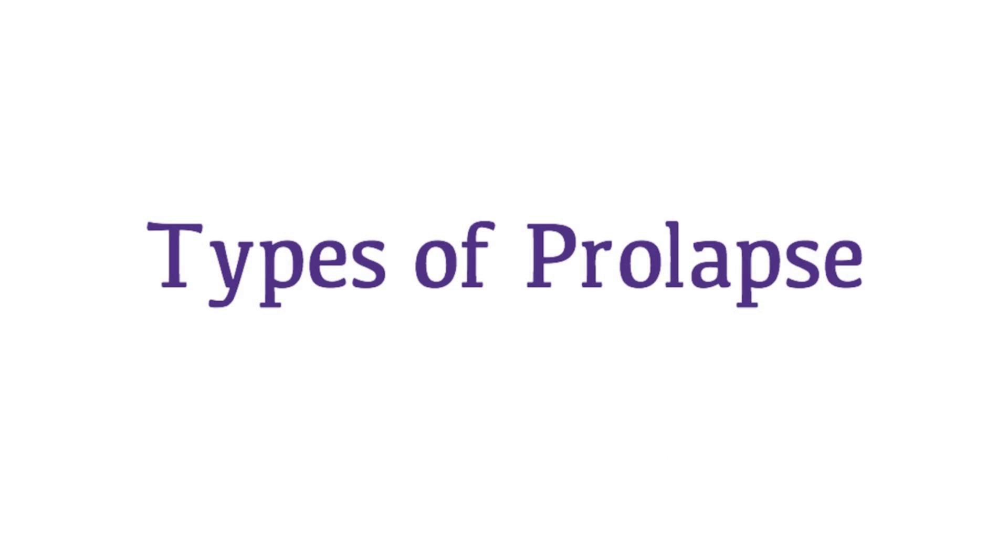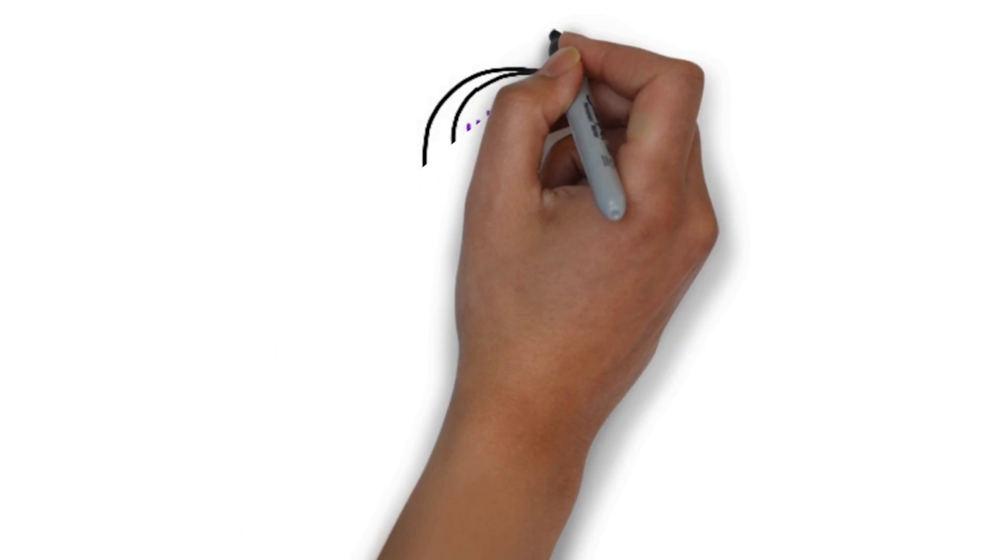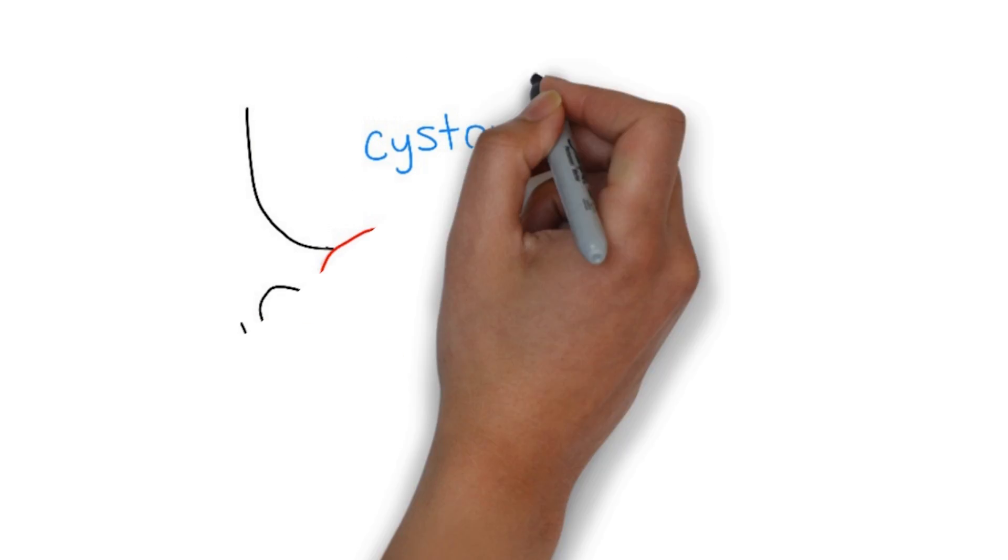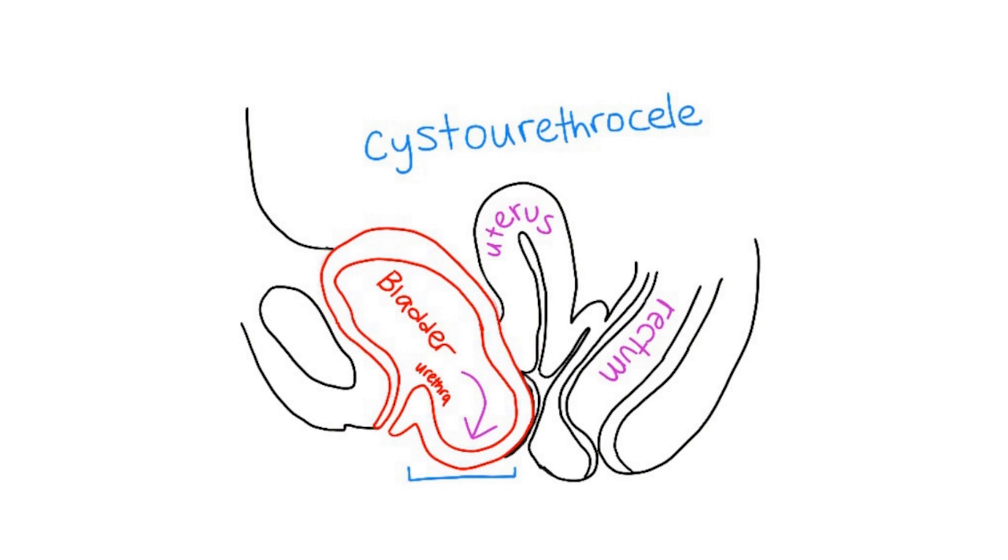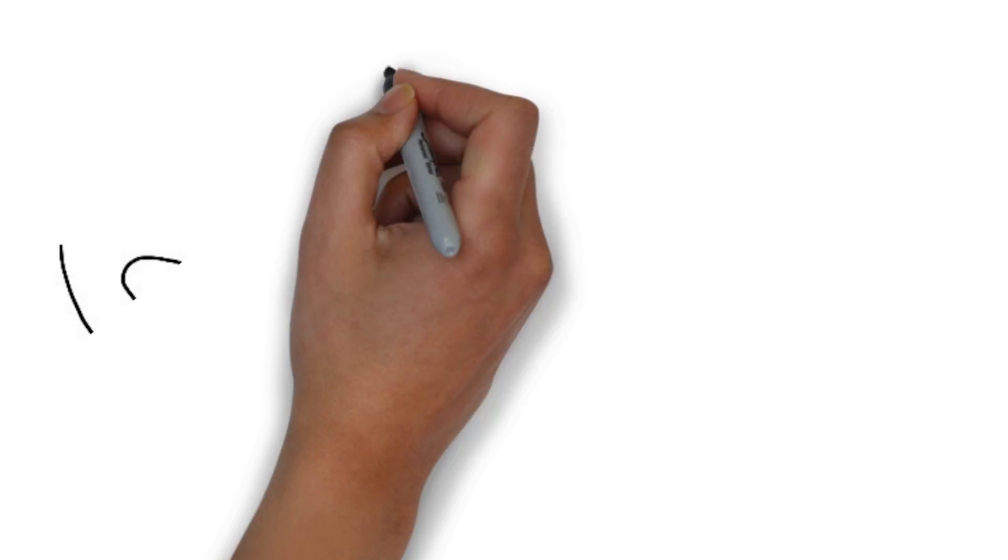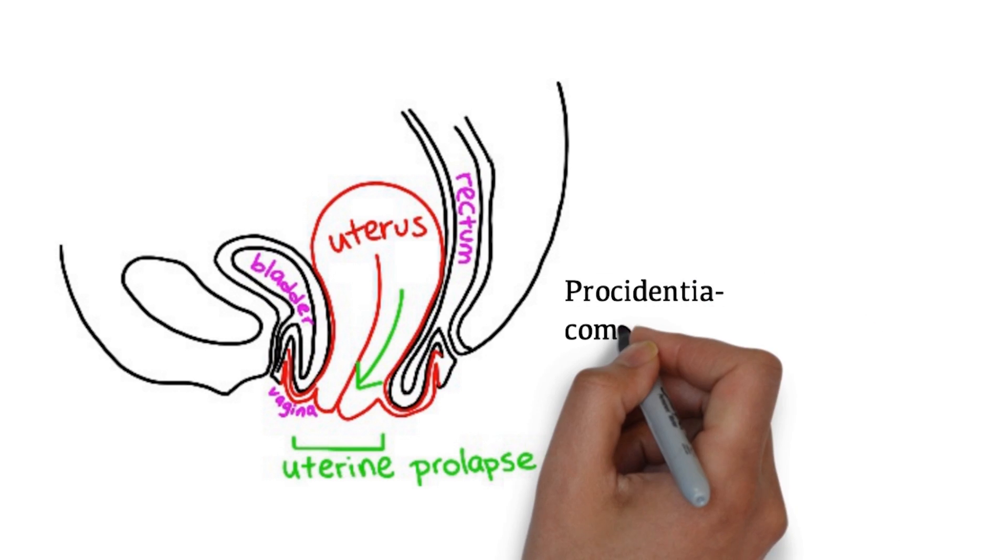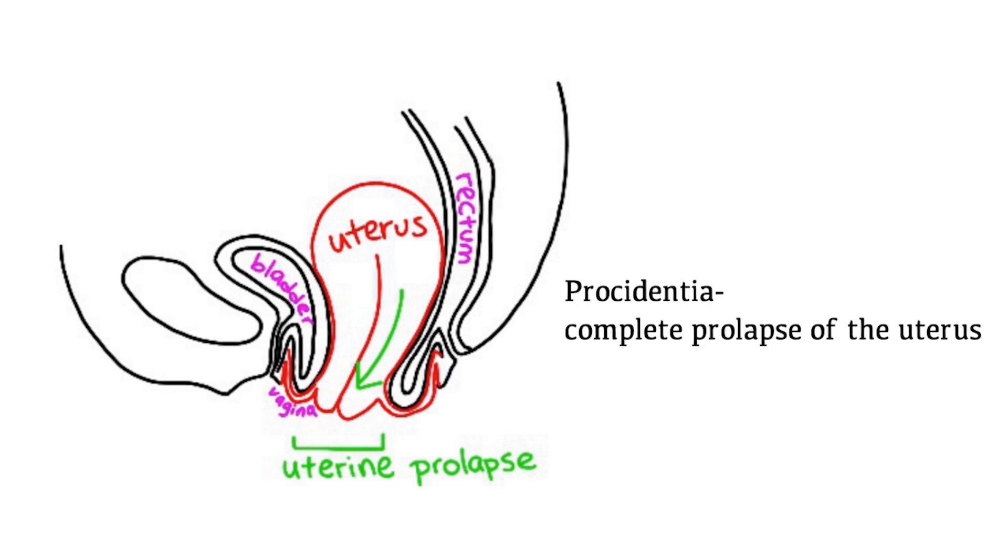So what are the different types of prolapse? Cystocele is a prolapse of the bladder. Cystourethrocele is a prolapse of the bladder and urethra. Uterine prolapse is a prolapse of the uterus. A complete prolapse of the uterus is called Procidentia.